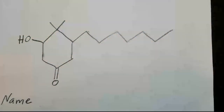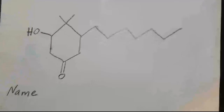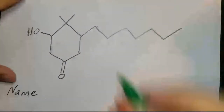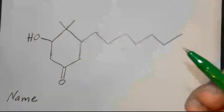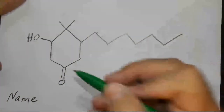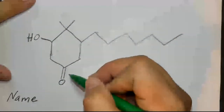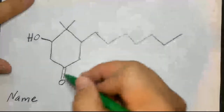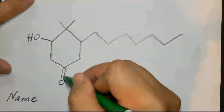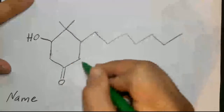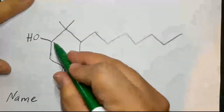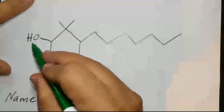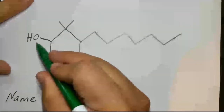What it comes down to is the length of the chain and where the primary functional group is. On this structure, we only have two functional groups. We have this double-bonded oxygen, which next to it only has two carbons, which means that it's a ketone. And we have this carbon right here that has an OH on it, which means it's an alcohol.